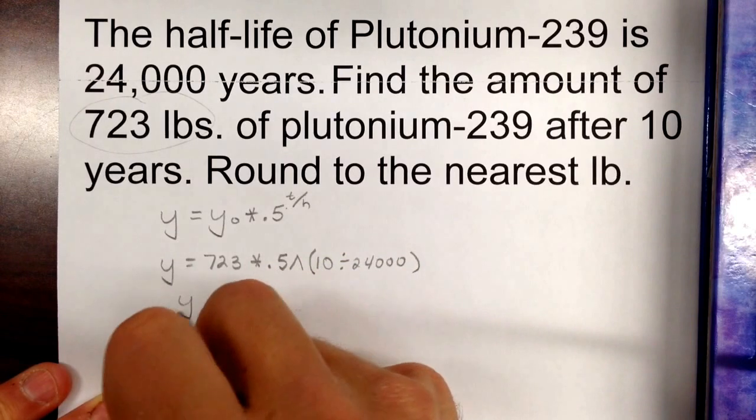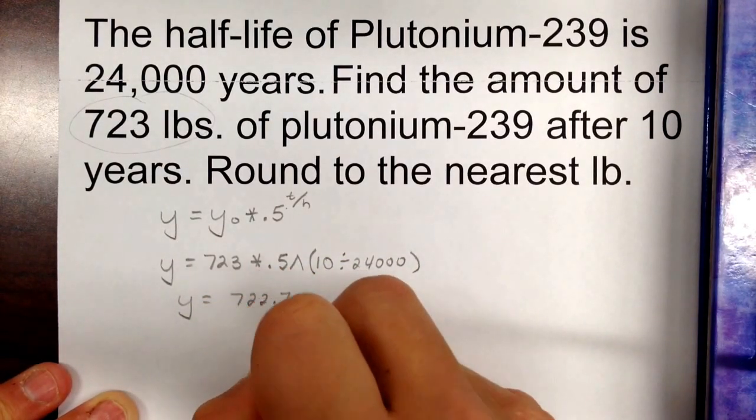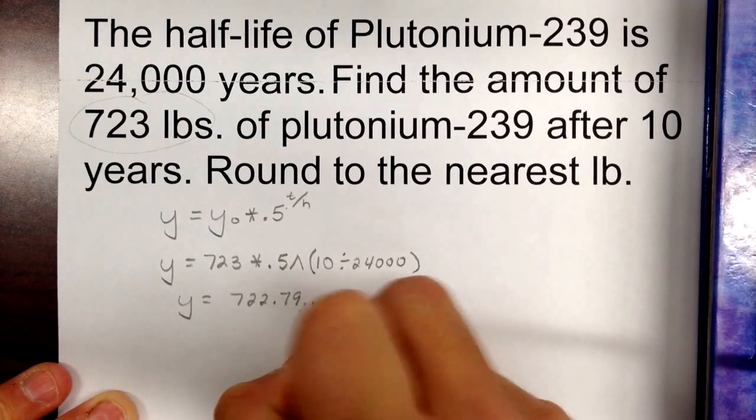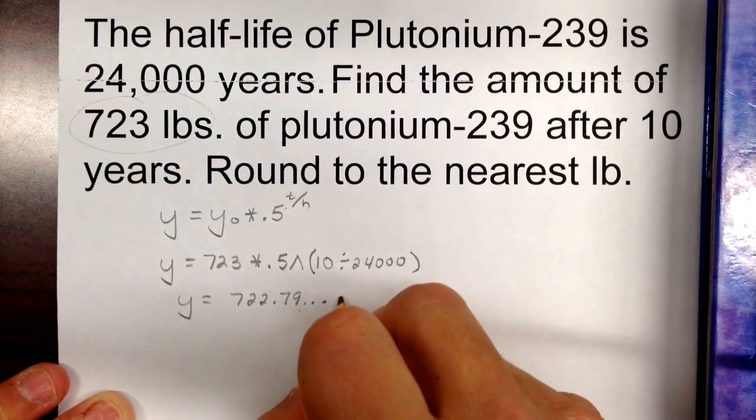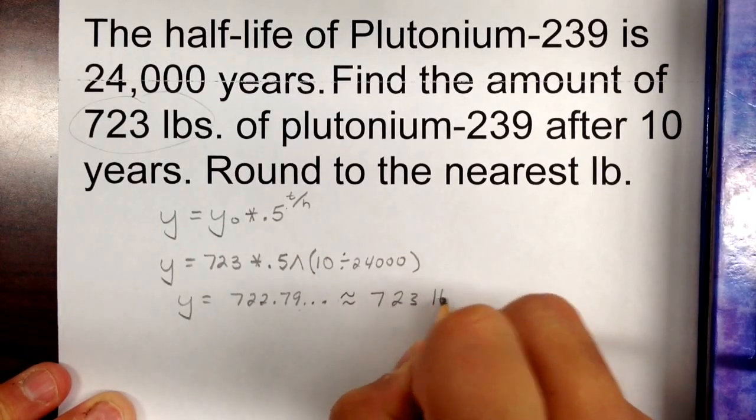When you put that in your calculator, you get something like 722 point, I think it's 7, 9. I don't remember the exact number, but it's really close to 723. And we're going to say that then around the nearest pound makes that 723 pounds.